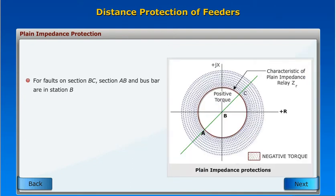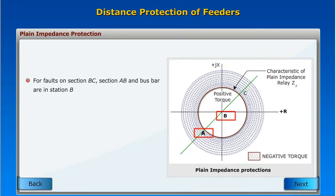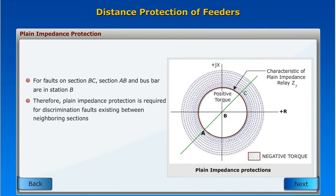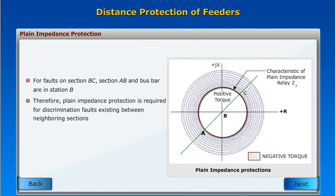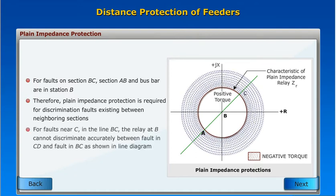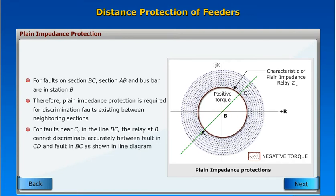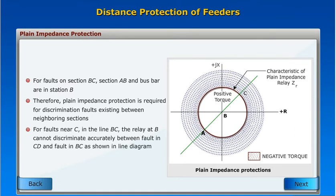For faults on section BC, section AB and the busbar at station B are also involved. Therefore, plane impedance protection is required for discrimination of faults existing between neighboring sections. For faults near C in the line BC, the relay at B cannot discriminate accurately between a fault in CD and a fault in BC, as shown in the line diagram.